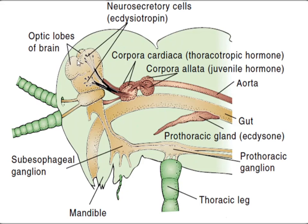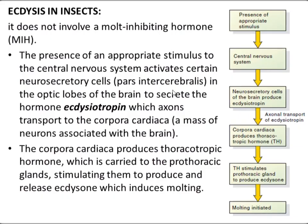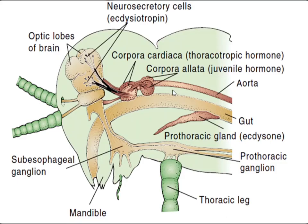In the diagram, these are the neurosecretory cells which produce ecdysiotrophin. This hormone travels to the corpora cardiaca, which then produce the prothoracicotropic hormone. The prothoracicotropic hormone causes the prothoracic gland to produce ecdysone.